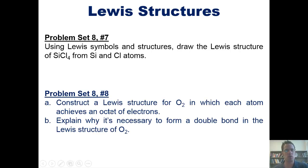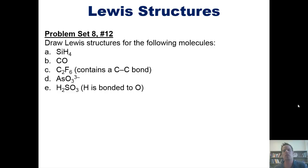In this question, I'm asking you to construct a Lewis structure for O2 in which each atom achieves an octet of electrons and then explain why it's necessary to form a double bond in the Lewis structure of O2. I won't show you how to do this one, but will invite you to do it on your own. In this question, I'd like you to draw Lewis structures for each of the following molecules. I won't show you the answers to these in this video, but we'll post a link here that you can click on to watch me answer some of them.